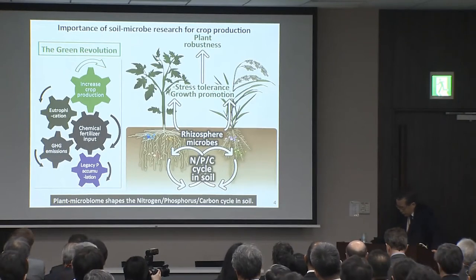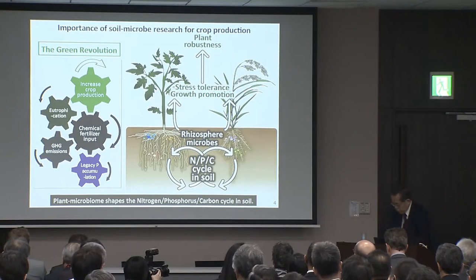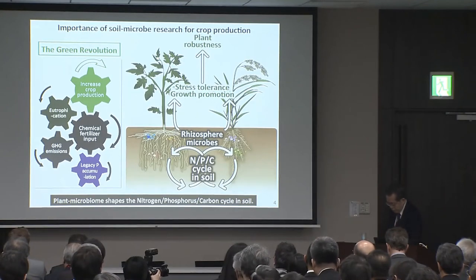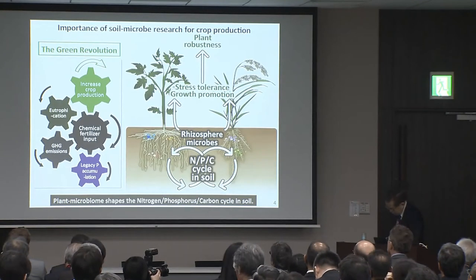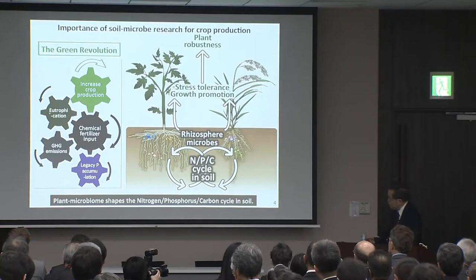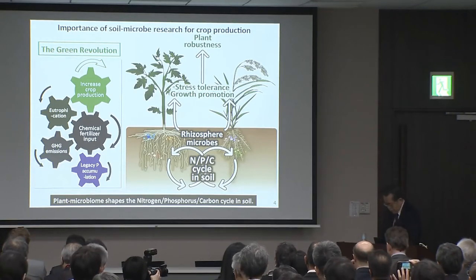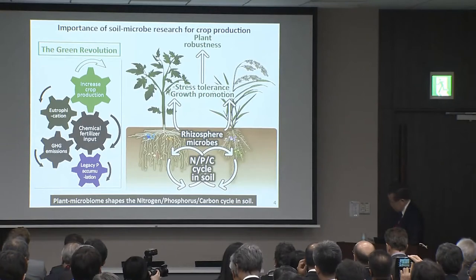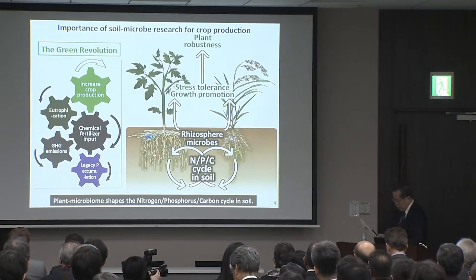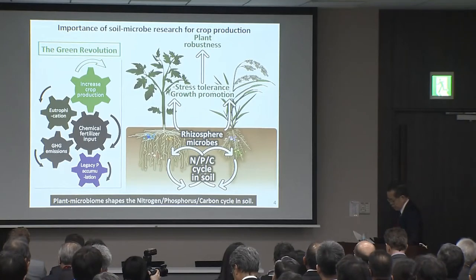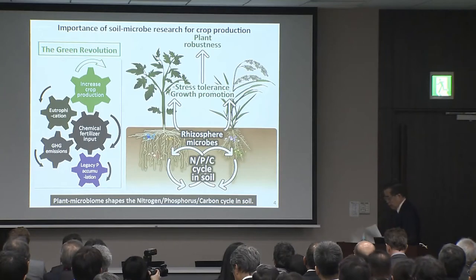As I mentioned, the 20th century green revolution using chemical fertilizer achieved increased crop production, but caused several environmental issues such as eutrophication and greenhouse gas emission, and legacy phosphorus accumulation in soil. In the natural soil, a huge amount of microorganisms exist, and especially in the rhizosphere, the interface between the plant and the soil, showing strong plant-microbe interactions.